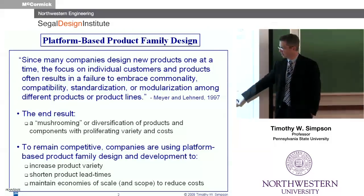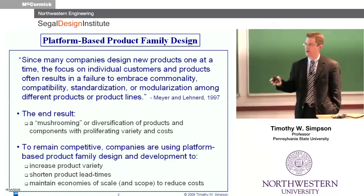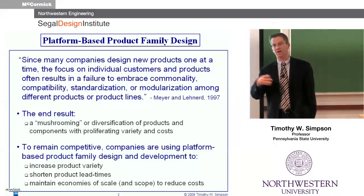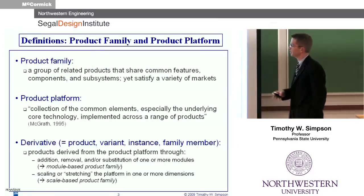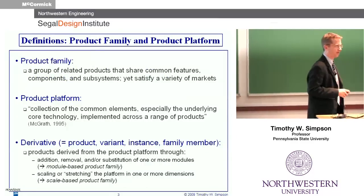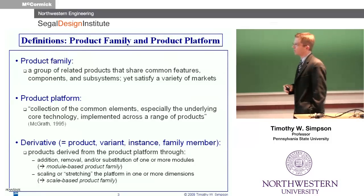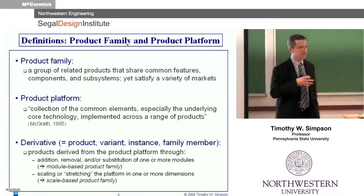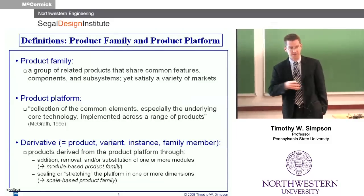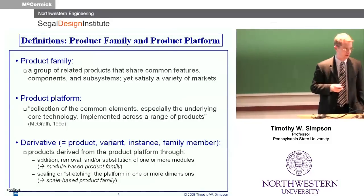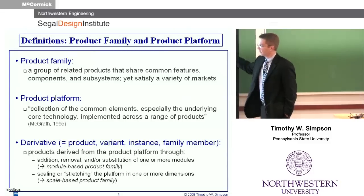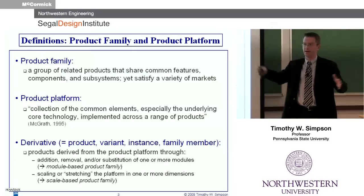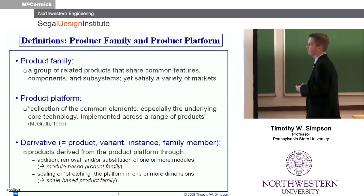So really where a lot of companies have been going is trying to find a good middle ground. Can we think about a platform from which we can create a family of products, still provide the variety for the marketplace, yet get to market quickly, reduce our costs, and still maintain those competitive advantages? Before I go further, a couple of definitions. A product family I loosely define as a related group of products that share common features, components, and subsystems, yet satisfy or target a variety of different markets — and that sharing or commonality is intentional.